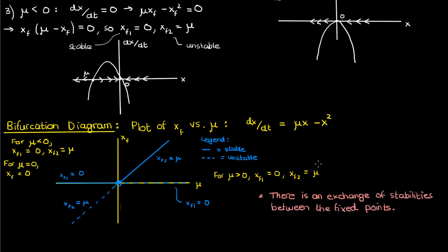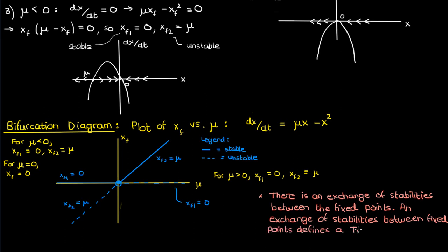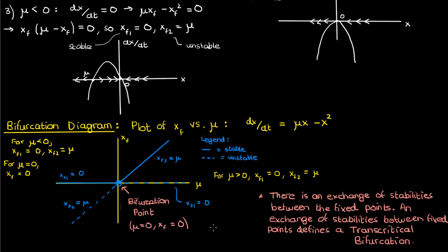The zero fixed point gives up its stability to the μ fixed point, and in exchange acquires its instability. This exchange of stabilities defines a transcritical bifurcation — a bifurcation in which there is an exchange of stability between the fixed points as they cross the bifurcation point. There are no fixed points created or destroyed; they just change their stabilities as we cross the bifurcation point, which in this case is at μ equals zero and xf equals zero.